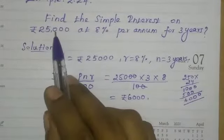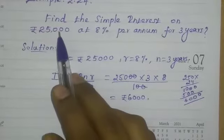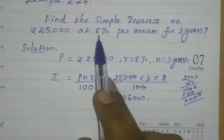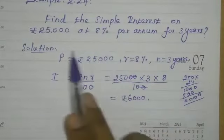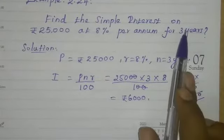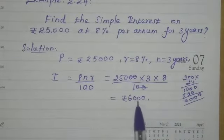The principal amount is 25,000. Suppose we will pay 25,000, we will pay 8% rate of interest, we will pay 3 years to the bank. The interest amount is 6,000. The amount is 25,000, the interest amount is 6,000.